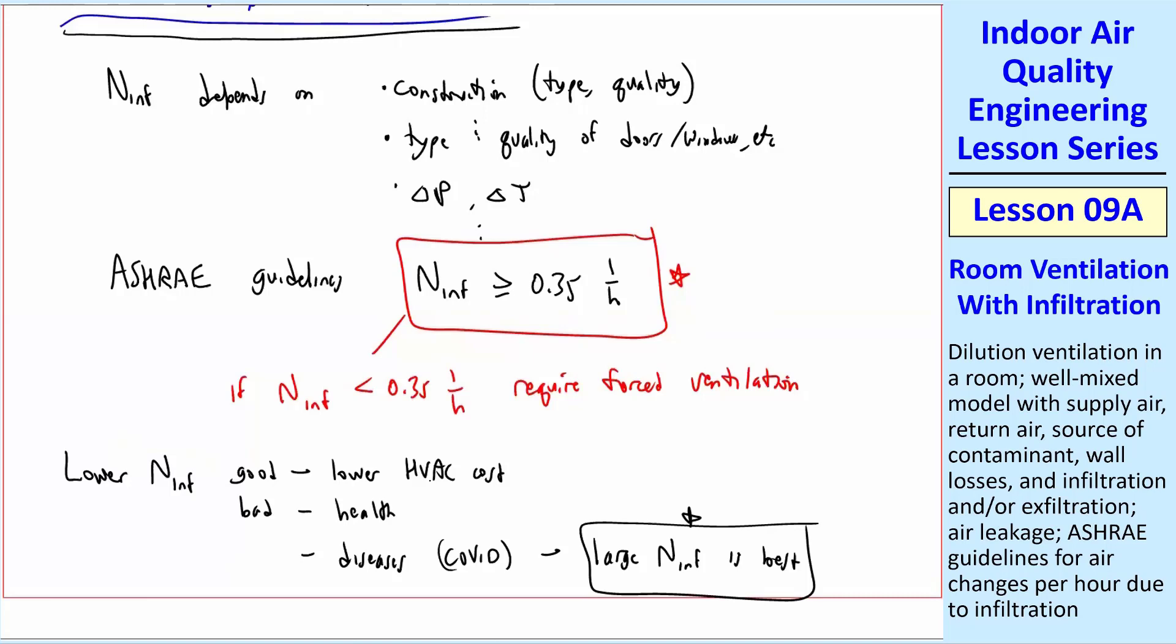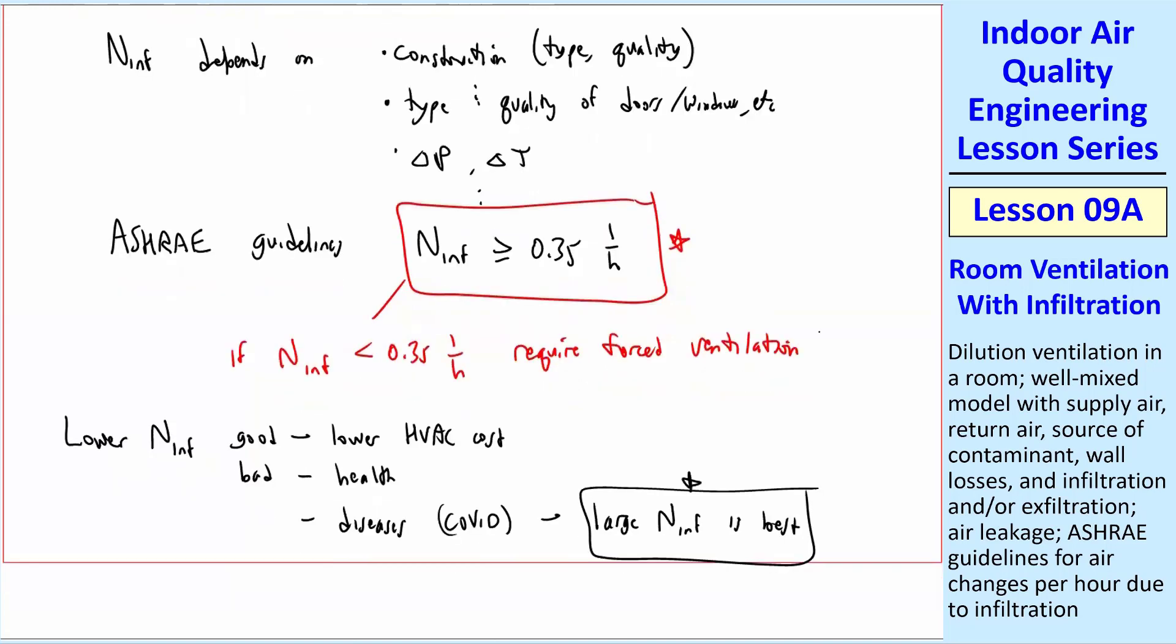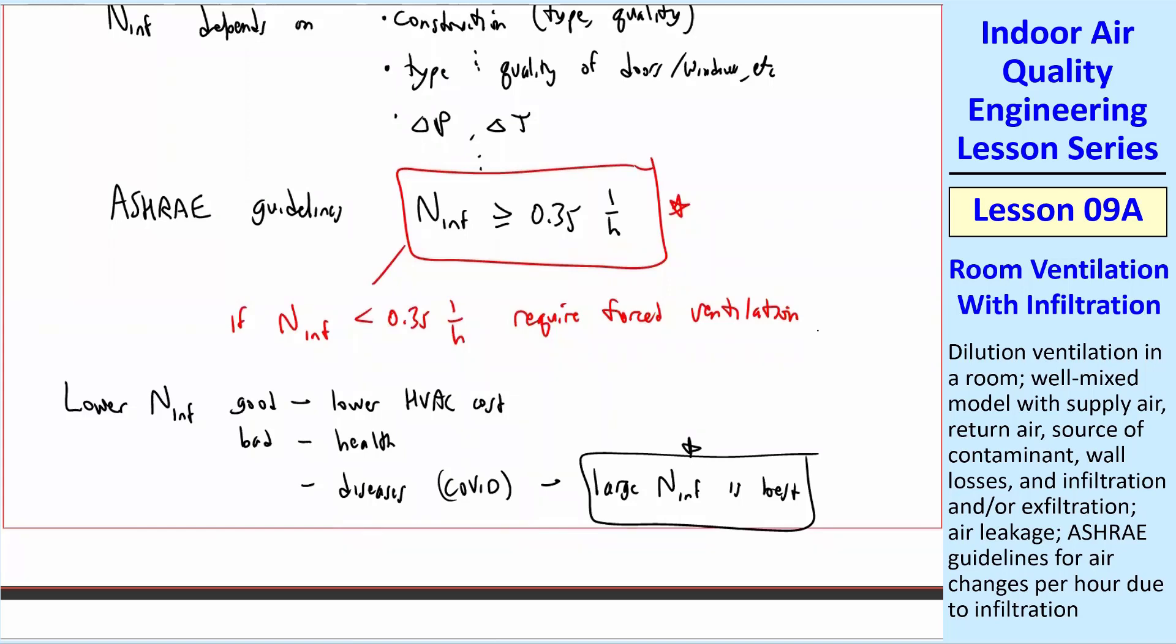You want a lot of infiltration. For COVID, a large N is best. So we have this dilemma. If you have a real high infiltration, and some of the CDC recommendations for indoor air now is that you keep a window open, well, that's fine when it's nice outside, but when it gets to be 20 degrees or 10 degrees outside, you don't want to have a window open. But if you did, you would have much healthier air inside the room. But you're going to pay for it. You're going to have to heat that.